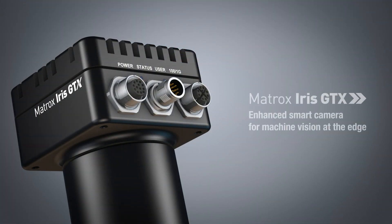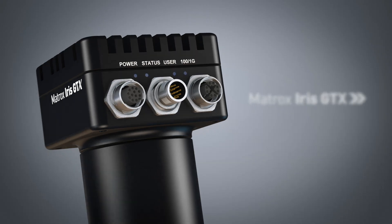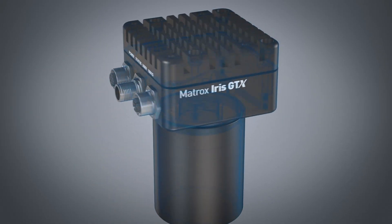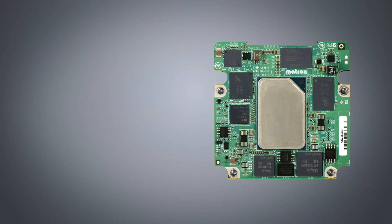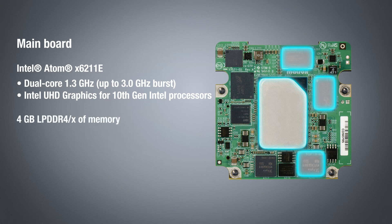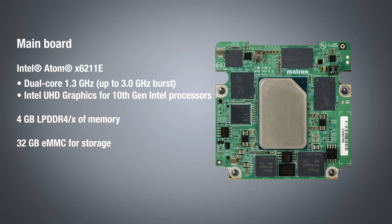Our latest smart camera is an evolutionary product from the established lineup of Matrox Iris smart cameras. Retaining the same footprint as the predecessor, the inner workings of the Matrox Iris GTX have been completely redesigned. Matrox Iris GTX leverages an Intel Atom X6000 series processor, formerly known as Elkhart Lake, to dramatically increase performance.